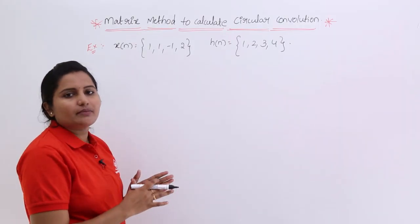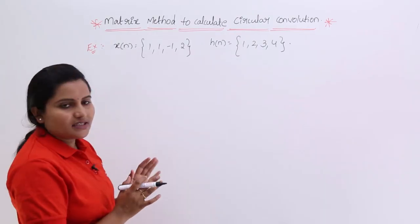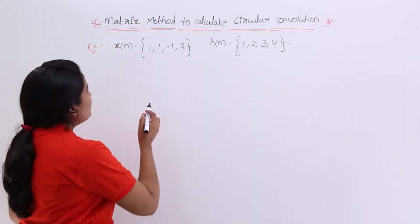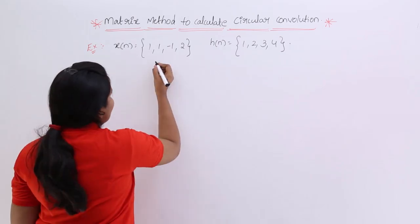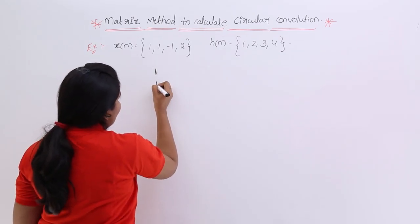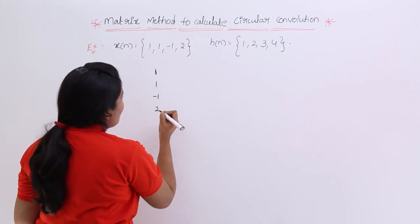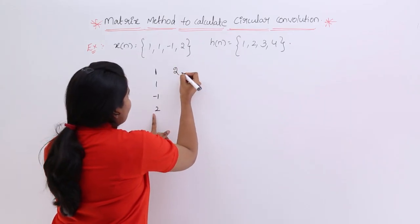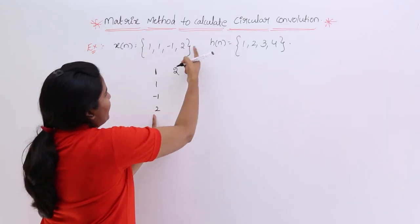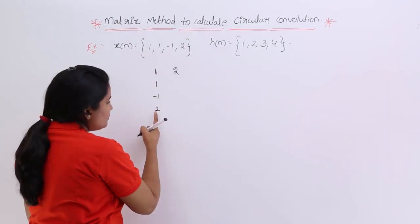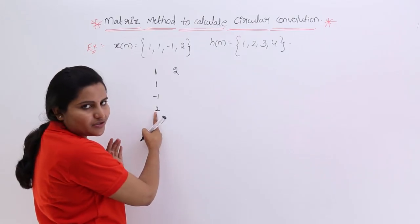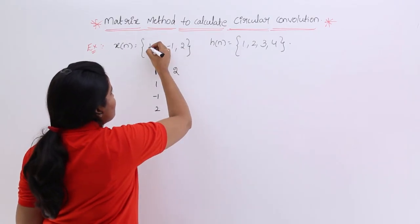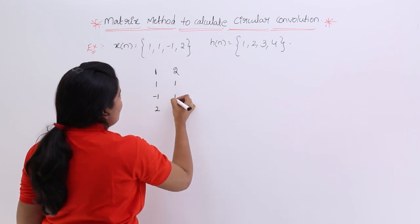For the matrix method, one signal is used to form the matrix and the second signal is written as a column vector for multiplication. First, write the samples of x(n) vertically: 1, 1, -1, 2. For the second column, take the last sample (2) and repeat it at the top, then continue with the first samples: 1, 1, -1.